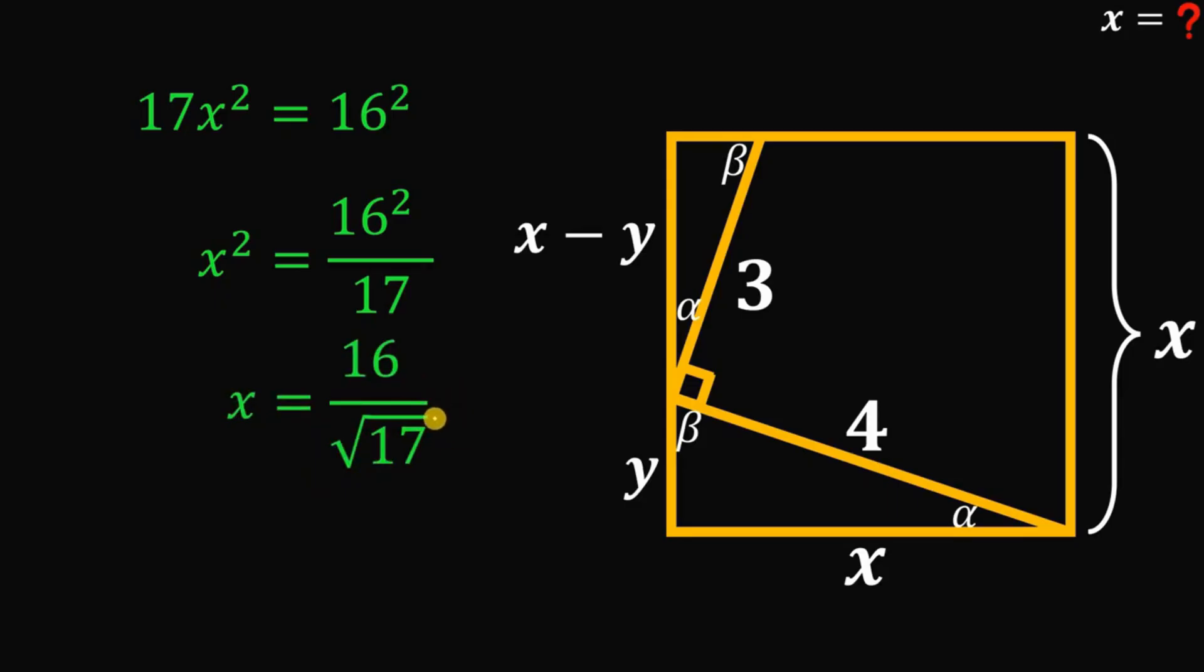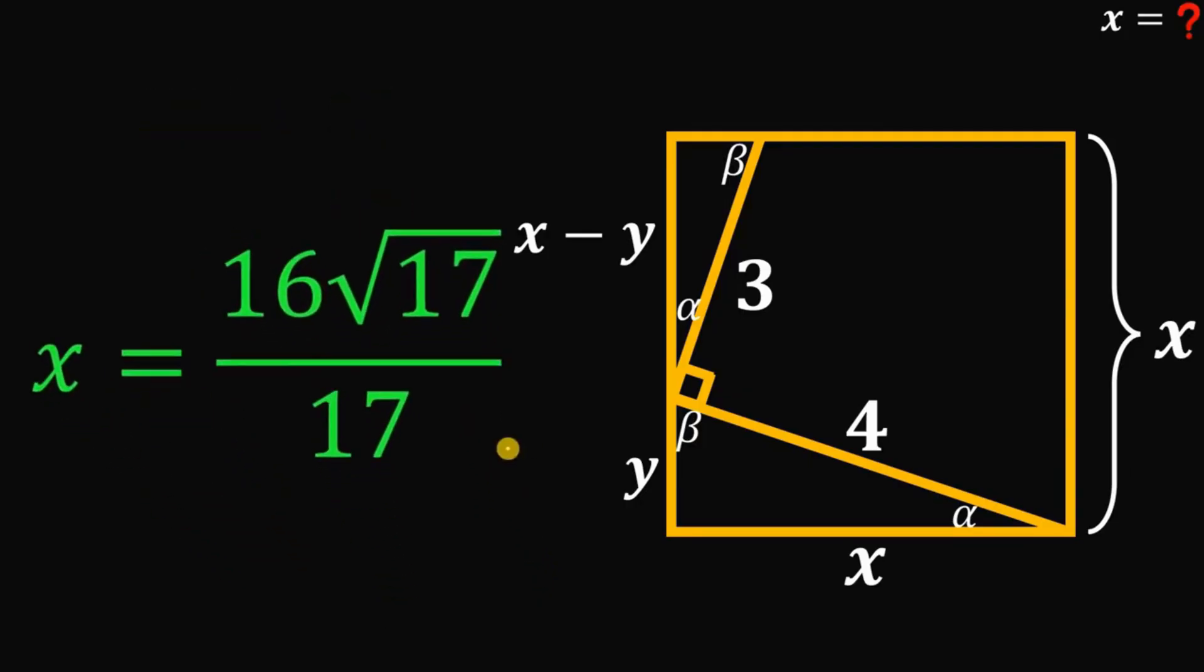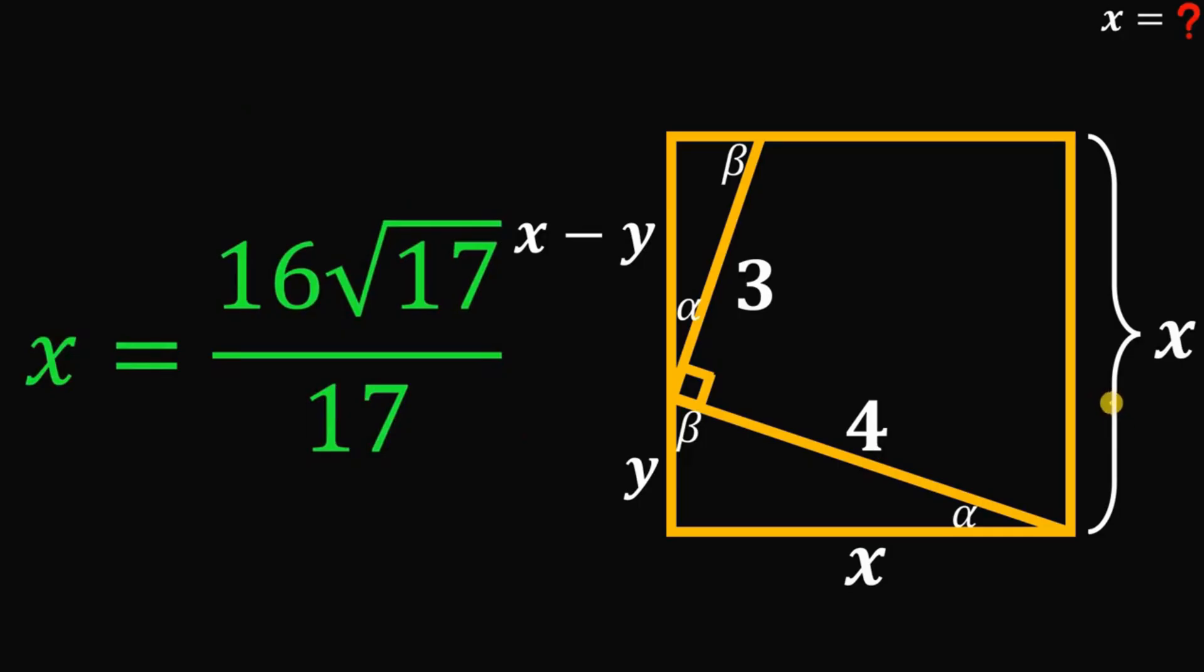Now rationalize this number because we don't want radicals on the denominator. Multiply the numerator and denominator by square root of 17. So x is just 16 multiplied by square root of 17 all over 17. And that is the value of x or the side of this square.